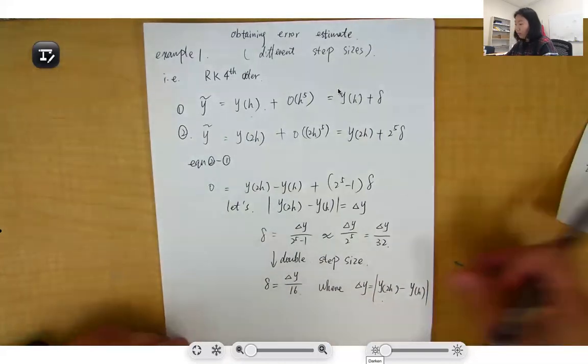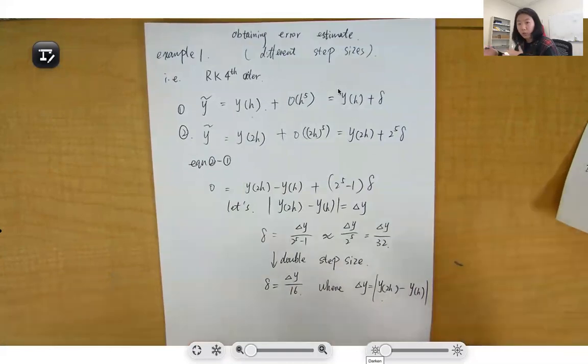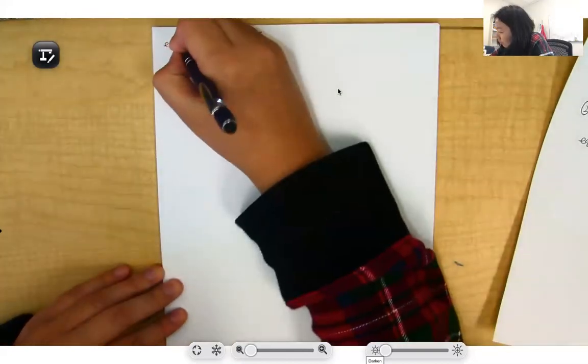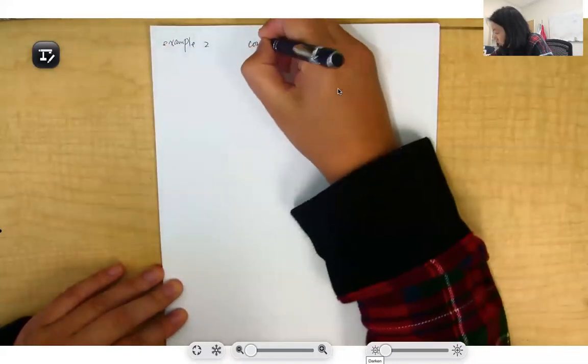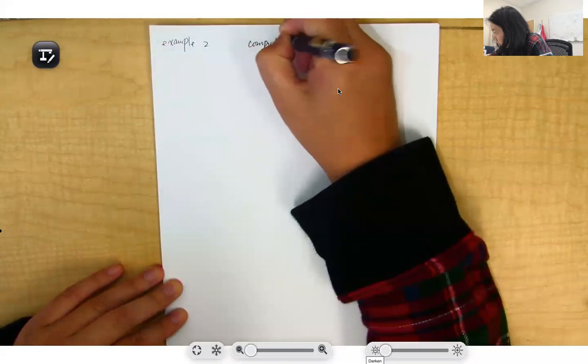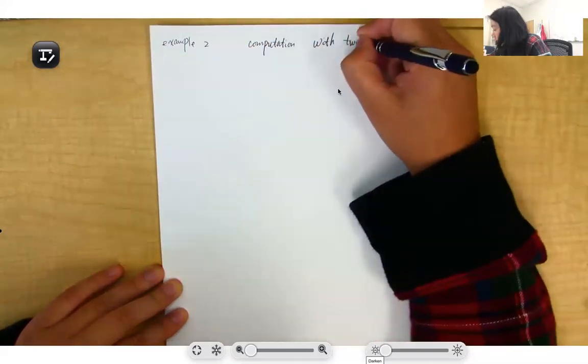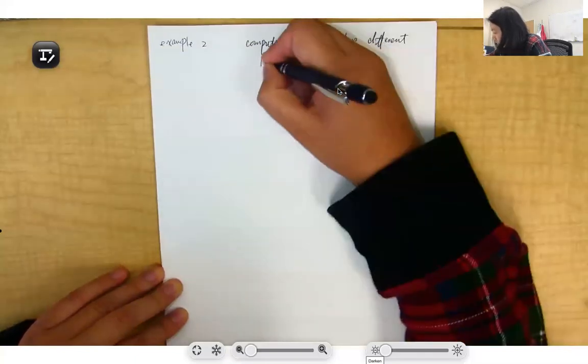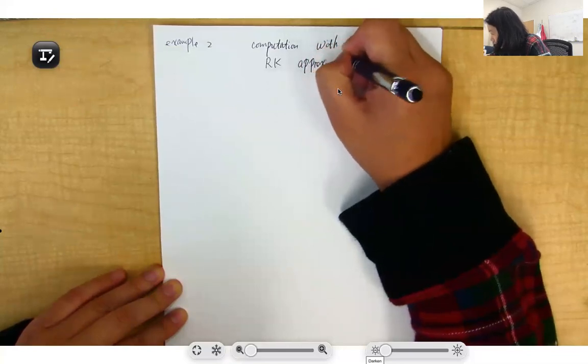Example 2 is computation with two different Runge-Kutta approximations.